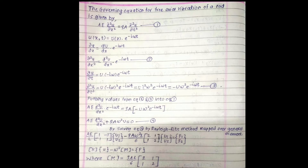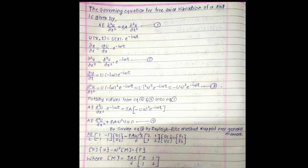I will call this equation number three. Now putting the values from equations two and three into equation one, I get: AE · d²U/dx² · e^(−iωt) = ρA · (−Uω²) · e^(−iωt). Simplifying: AE · d²U/dx² + ρAω²U = 0.